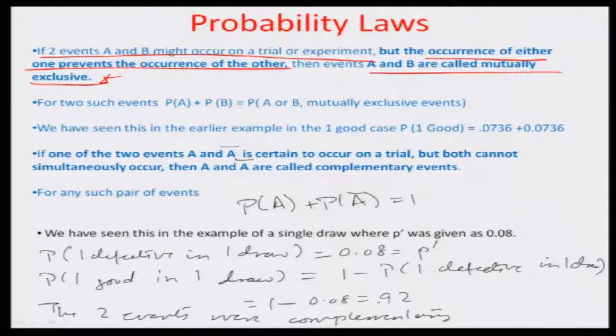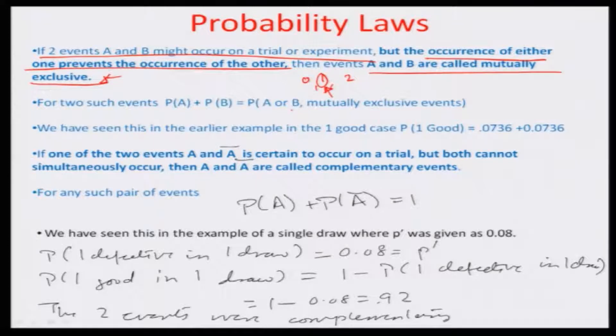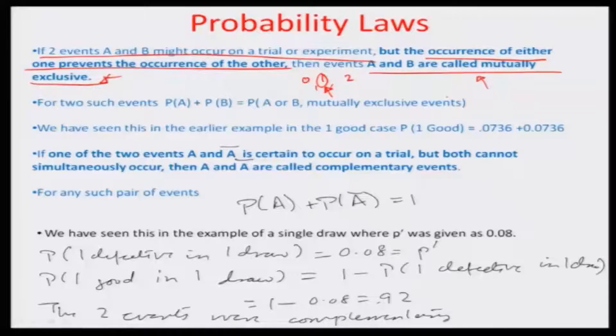For example, if we are talking about percentage defectives and a defective piece, in two draws there can be 0 defective, 1, or 2. Consider the one-defective case: out of the two draws, if one is defective the other has to be good. So they are mutually exclusive sets — one is definitely defective and the other good, or vice versa.